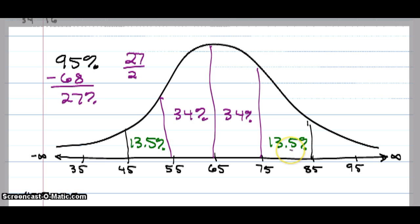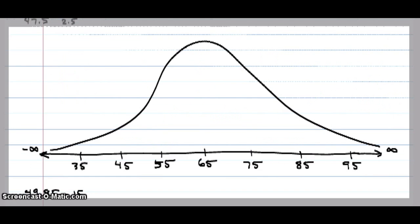This says the probability that x is between 45 and 55 equals 13.5%. Let's go to the third standard deviation out.